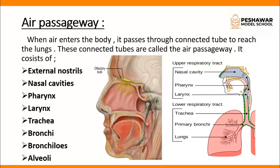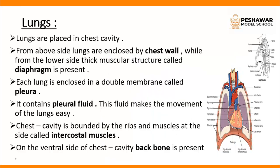In these two diagrams, the different parts of the air passageway are clearly shown. The second part of the human breathing system is the lungs. Lungs are placed in the chest cavity, enclosed from above by the chest wall and from below by the thick muscular diaphragm. Each lung is enclosed in a double membrane called the pleura, which contains pleural fluid that makes the movement of lungs easy. The chest cavity is bounded at the sides by ribs and intercostal muscles, and on the dorsal side by the backbone. Lungs are protected by all these components, and they also provide oxygenated blood to the heart.